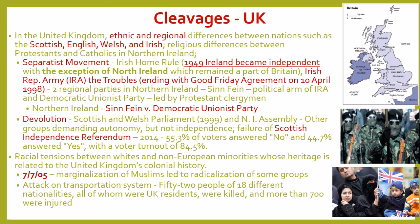In the United Kingdom, the cleavages tend to be ethnic and regional. They are born out of the fact that the UK is a united kingdom of kingdoms, including Scotland, England, Wales, and Ireland. These different ethnic groups create ethnic cleavages within society. It's also regional because we have the kingdom of England and the kingdom of Scotland, all united under the United Kingdom. It also tends to be religious, with religious differences between the Irish Catholics and the Protestant English, Welsh, and Scottish.